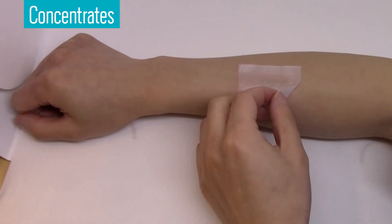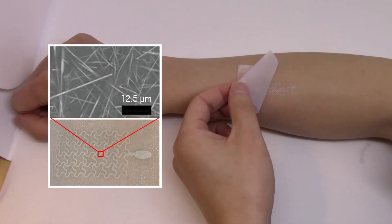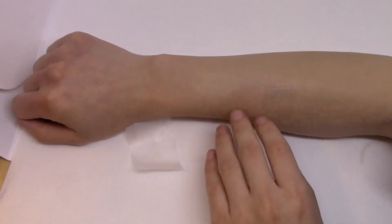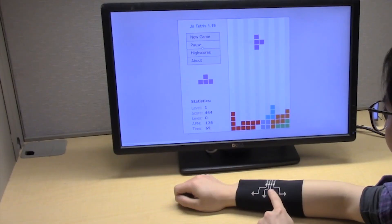This researcher looks like they're putting on a temporary tattoo, but they're actually applying an ultra-thin electrode. Laced with conductive silver nanowires, this ultra-thin electrode can be used to monitor heart signals or even play a game of Tetris.